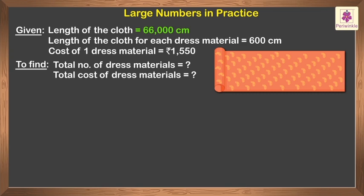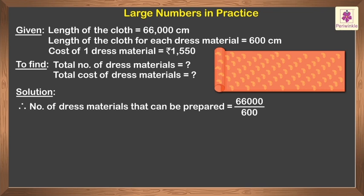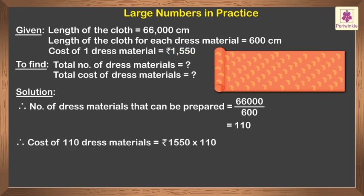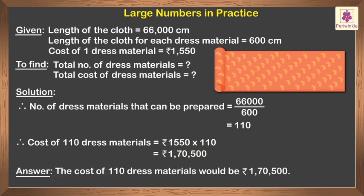The total length of the cloth is sixty-six thousand centimeters. The length required for each dress material is six hundred centimeters. Therefore, the number of dress materials that can be prepared is one hundred ten. Each dress material costs rupees one thousand five hundred fifty. Therefore, the cost of one hundred ten dress materials is rupees one thousand five hundred fifty multiplied by one hundred ten, which equals rupees one lakh seventy thousand five hundred.